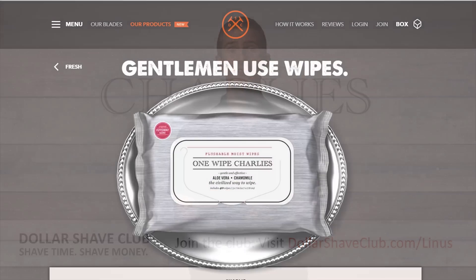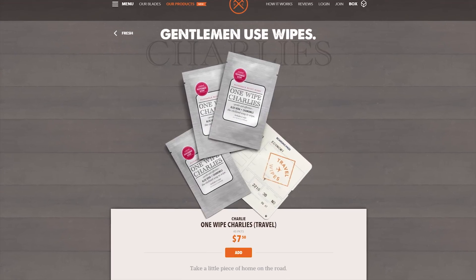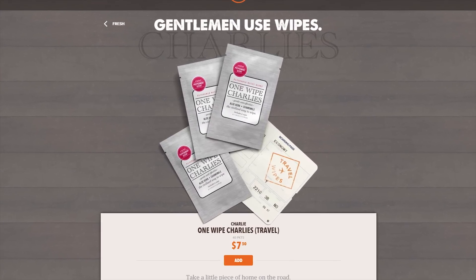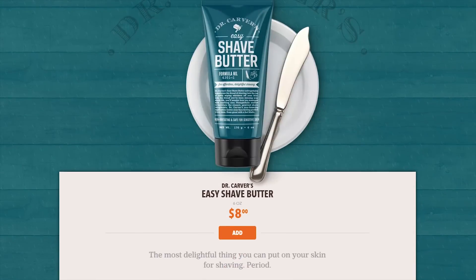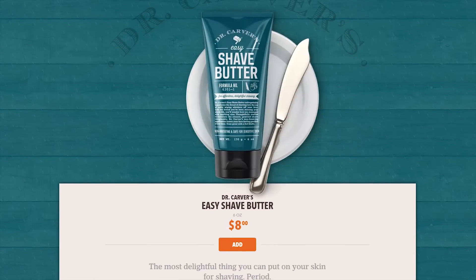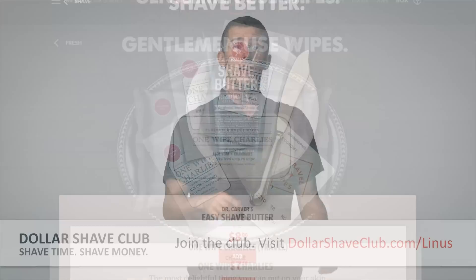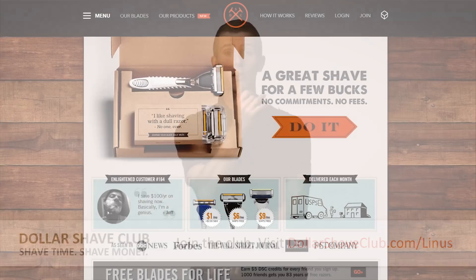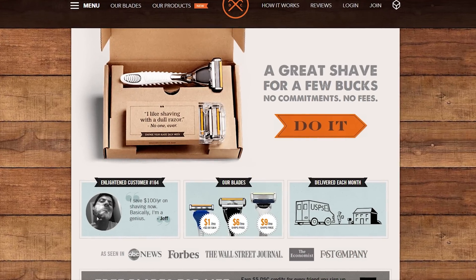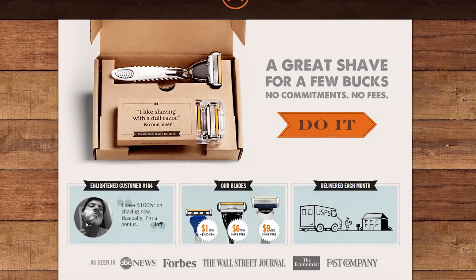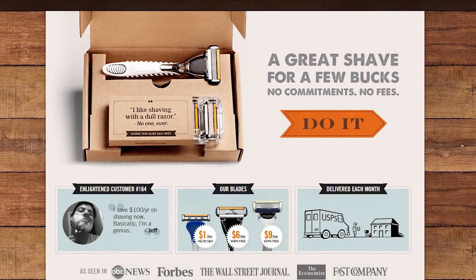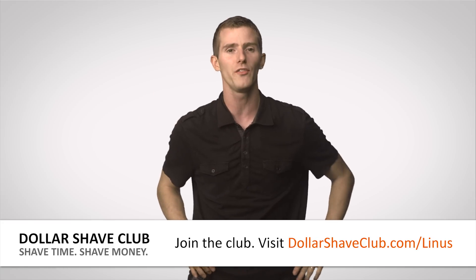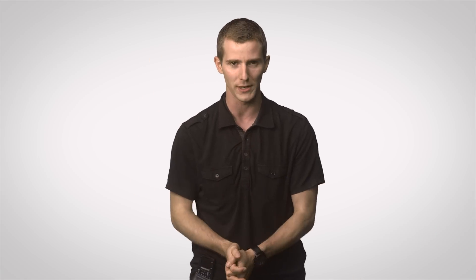They also have other products like their One Wipe Charlie's Peppermint Scented Butt Wipes for Men, their Post Shave Moisturizer and their Dr. Carver Shave Butter which goes on clear so you can actually see what you're doing. High quality razors and bathroom supplies directly to your door once a month for a few bucks a month. Visit DollarShaveClub.com slash Linus to join the club now. It's available in the US, Canada and Australia.